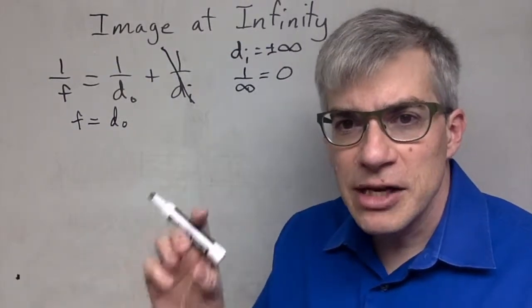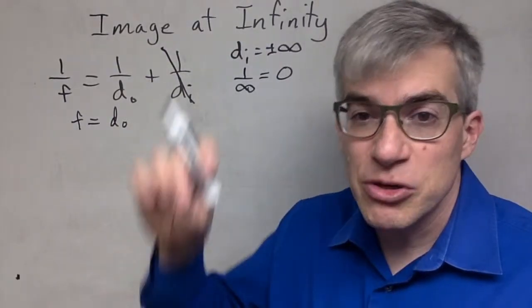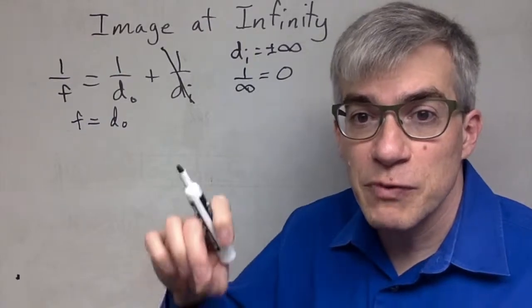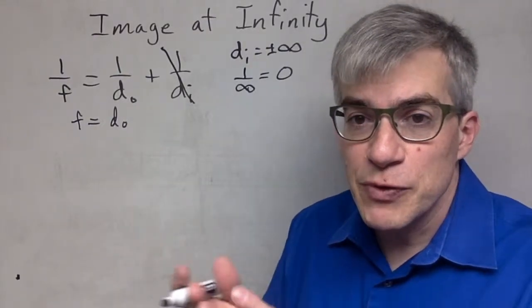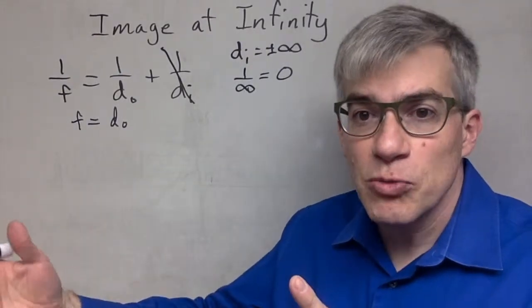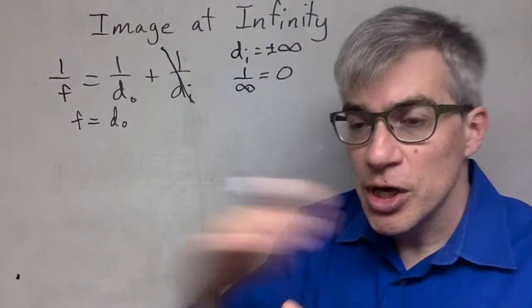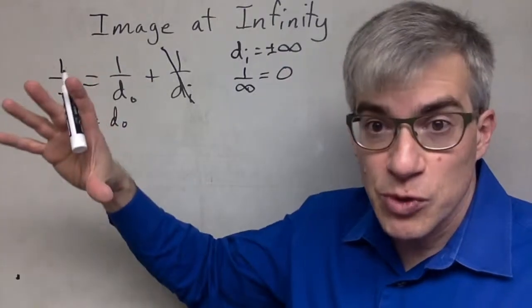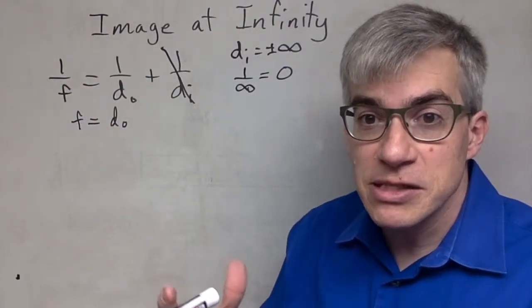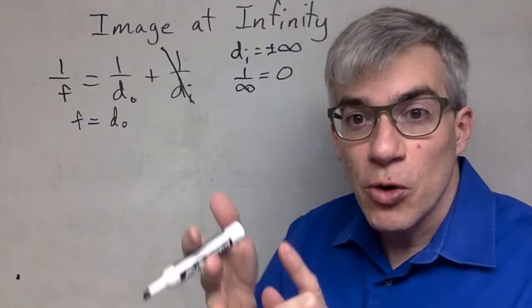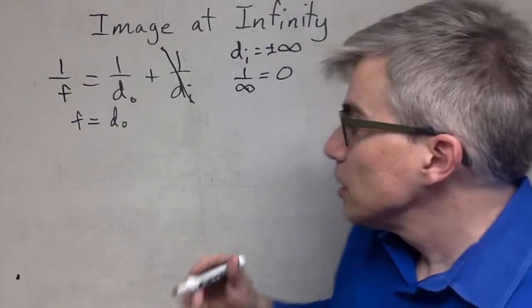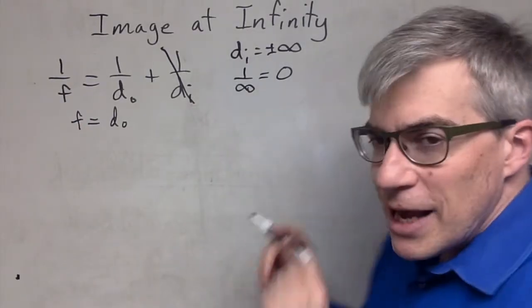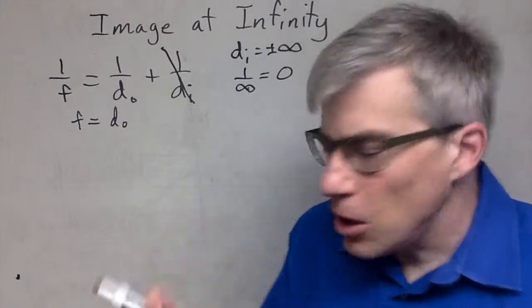In other words, to get an image at infinity, you put the object right on top of the focal point. Remember, if you're farther out than the focal point, you'll get an inverted real image. If you're closer than the focal point, you're going to get an enlarged virtual image, depending on whether the lens is in movie projector mode or magnifying glass mode. So this is what happens when you land it exactly on.